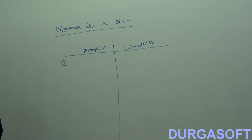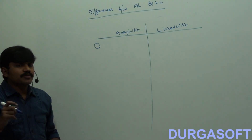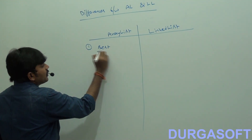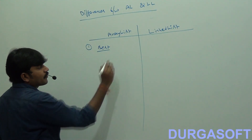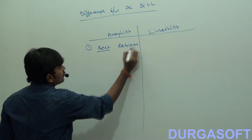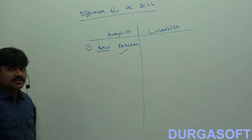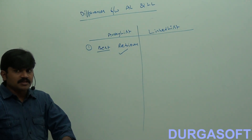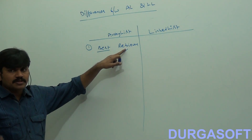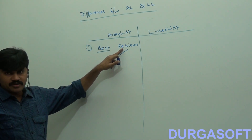ArrayList is the best choice if our frequent operation is retrieval. Because ArrayList class implements random access. That's why, if our frequent operation is retrieval, ArrayList is the best choice.